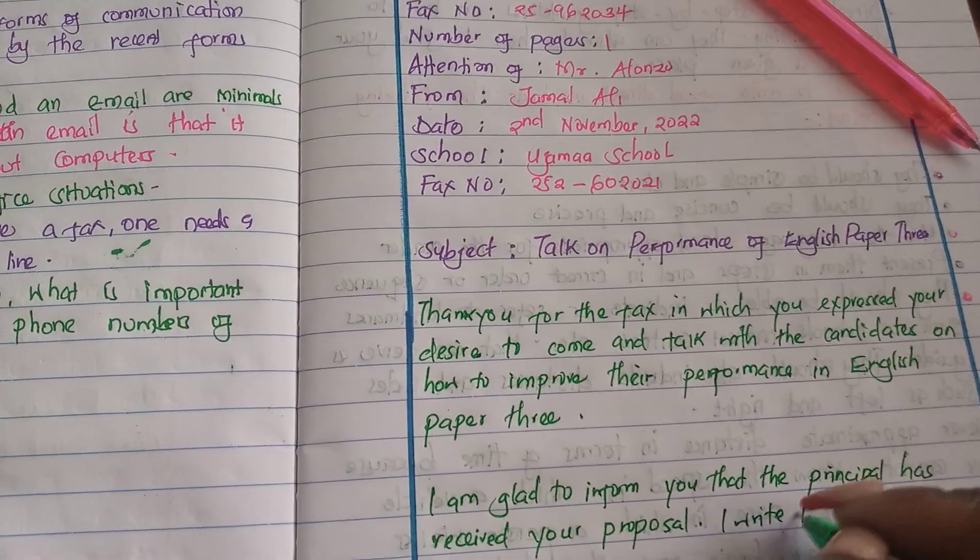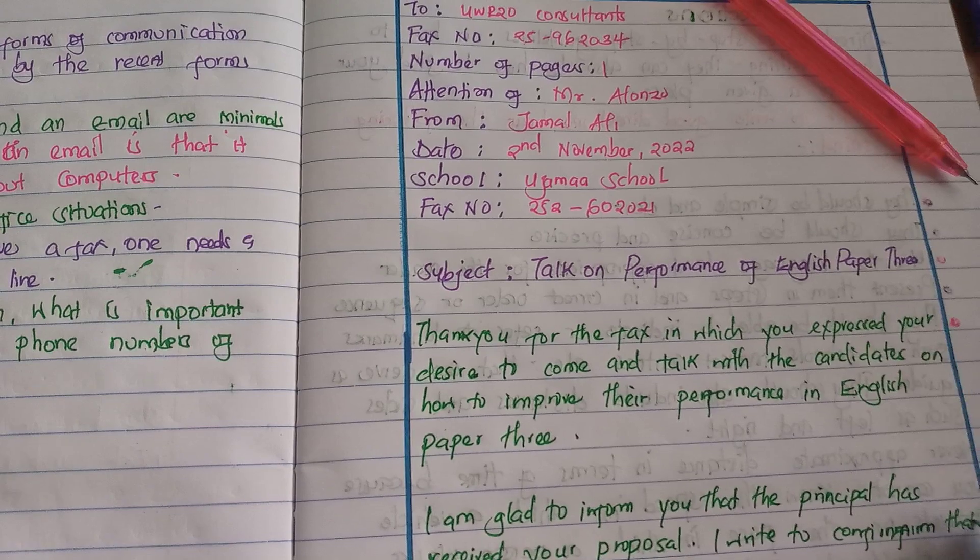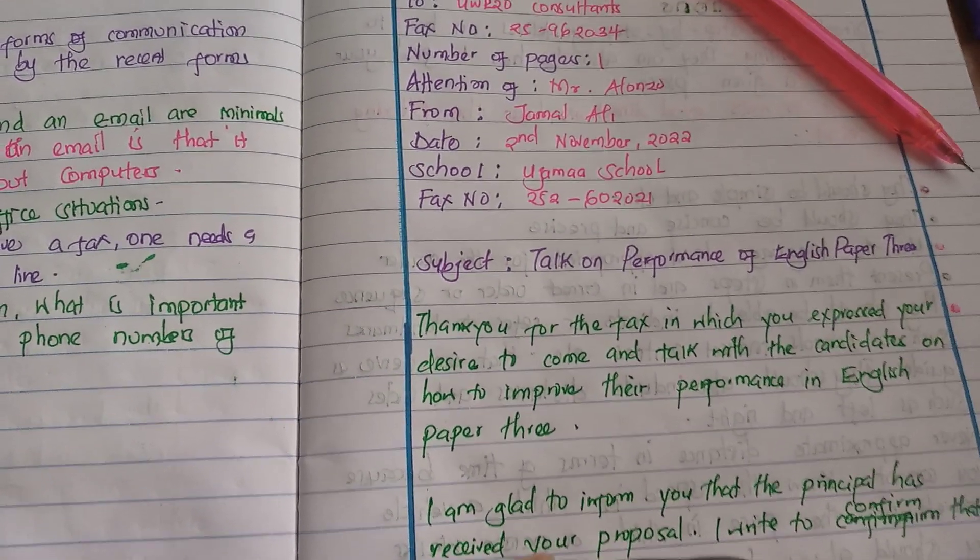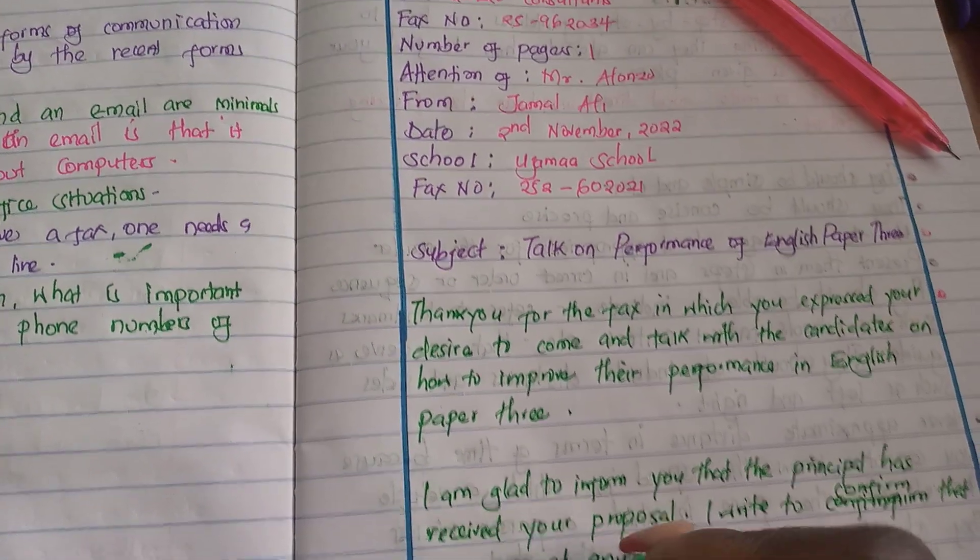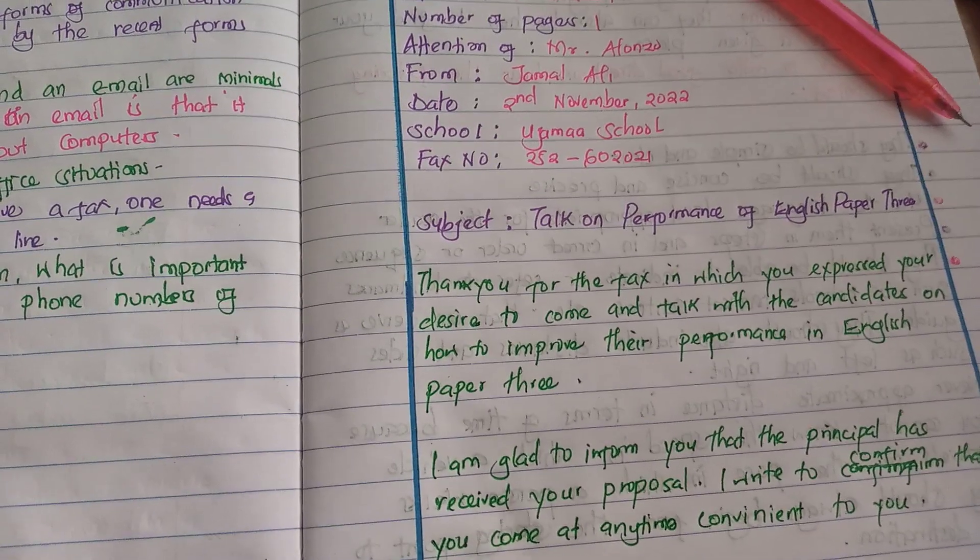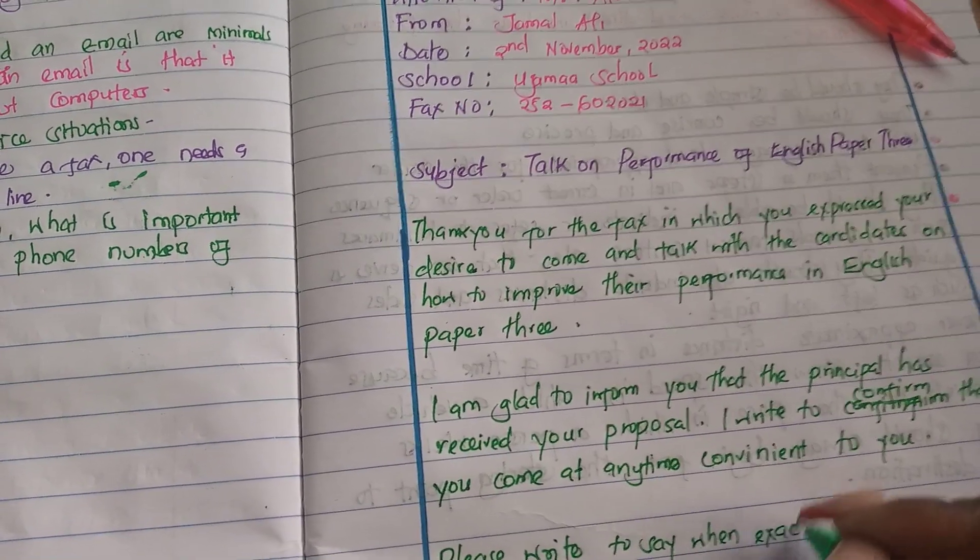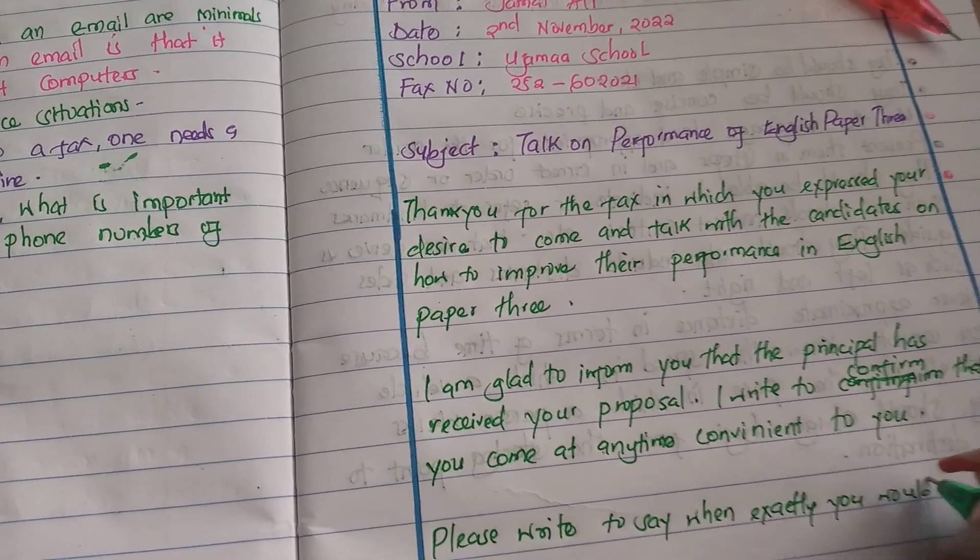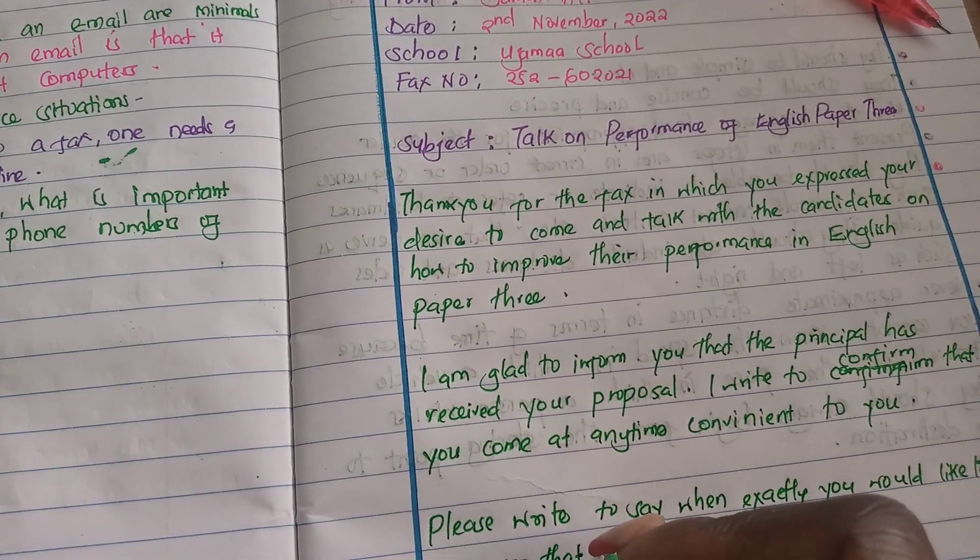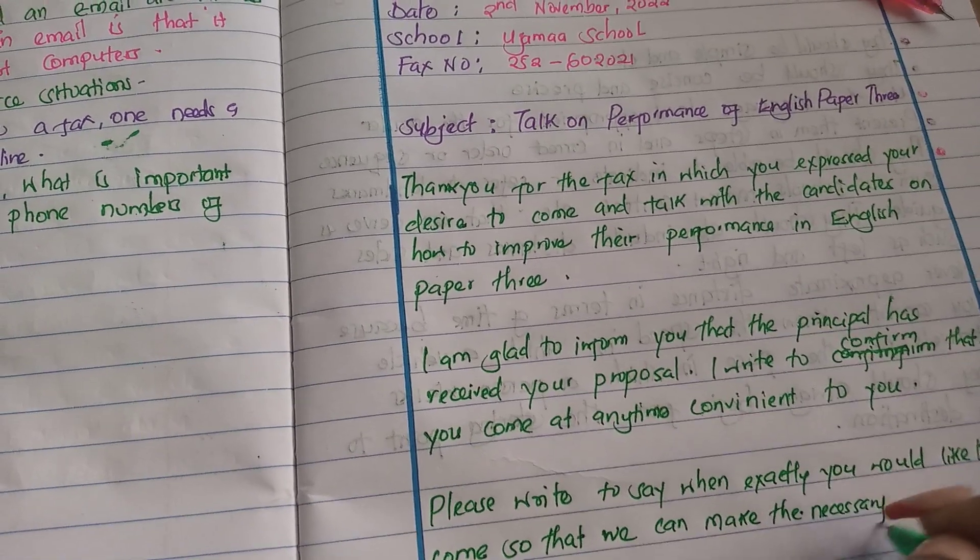I write to confirm that you come at any time I am convenient to you. Please write to say when exactly you would like to come, so that we can make the necessary arrangements.